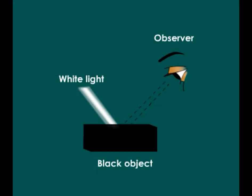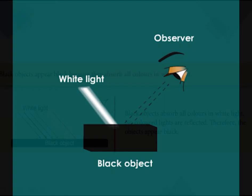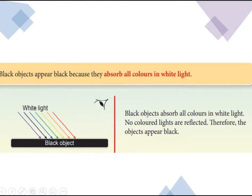What color can you see when a black object is illuminated by white light? Black objects absorb all colors in white light, so no colored lights are reflected. Therefore, the object appears black.